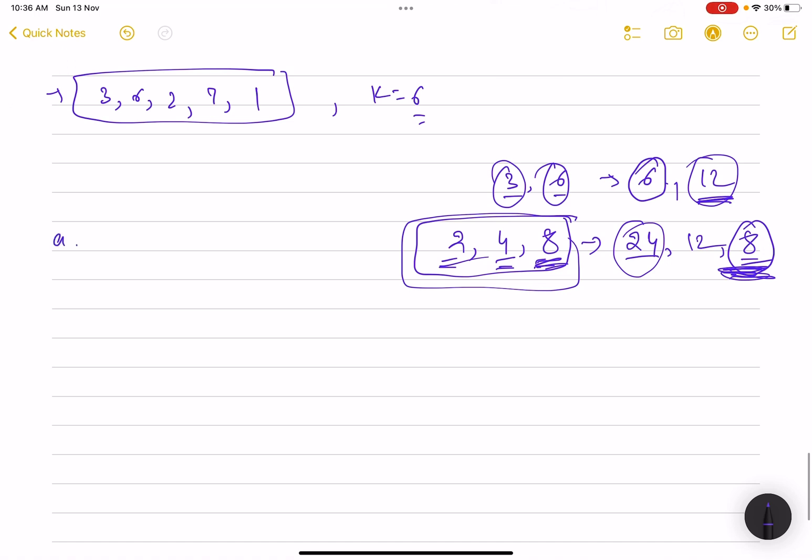Also, for two numbers a and b: a × b = LCM(a, b) × GCD(a, b). This is a very common formula.